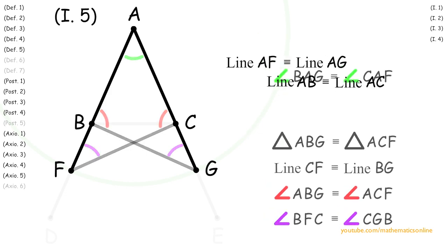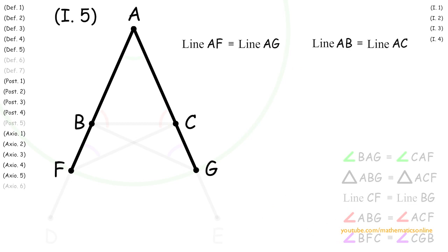So next, we have line AF is congruent to line AG, and line AB is congruent to line AC. With these two facts, we will use axiom 3 to show that line AF minus line AB is congruent to line AG minus line AC. And what this turns out to be is line BF is congruent to line CG.